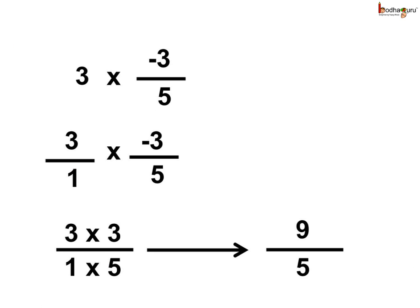We do the same while multiplying negative rational numbers too. That is, we multiply the numerator by the numerator and the denominator by the denominator. Here we are multiplying minus 3 by 5 by 3. So the problem is 3 multiplied by minus 3 by 5. Now, 3 can be written as 3 by 1.